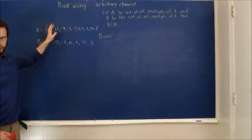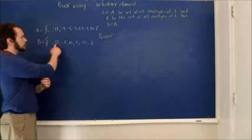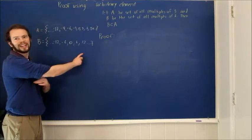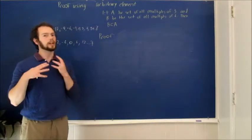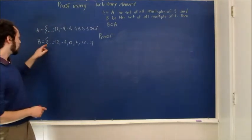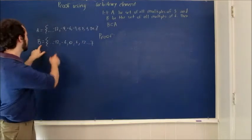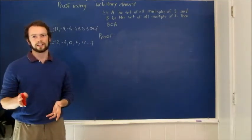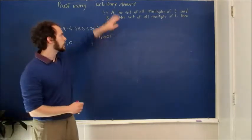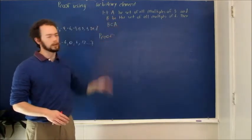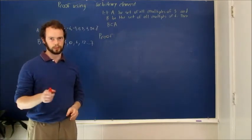Now this is not a proof, because all I've done here is I've shown these specific numbers that I wrote down are also in here, but that doesn't necessarily mean that all of them are. After all, there are an infinite number of numbers in each of these sets, so you could never test all of them. You could probably see intuitively why this must be true, but that's not quite the same thing as a rigorous proof either.